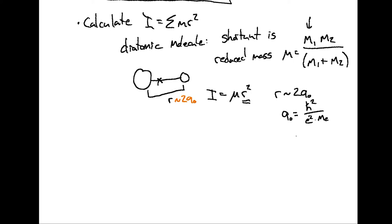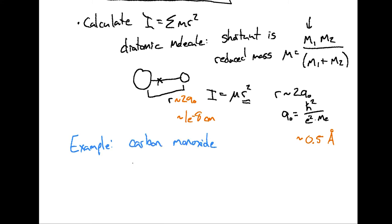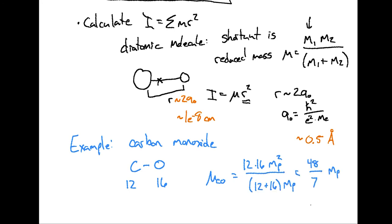A Bohr radius is approximately half an angstrom, so two Bohr radii is about one angstrom. Let's do an example with carbon monoxide, a diatomic molecule. Carbon has 12 atomic mass units (6 protons, 6 neutrons), and oxygen has 16 atomic mass units (8 protons, 8 neutrons). The reduced mass of CO is (12×16)/(12+16) times the proton mass — ignoring the proton-neutron mass difference — which equals 48/7 times a proton mass, approximately 7 proton masses, roughly 2×10⁻²⁴ grams.